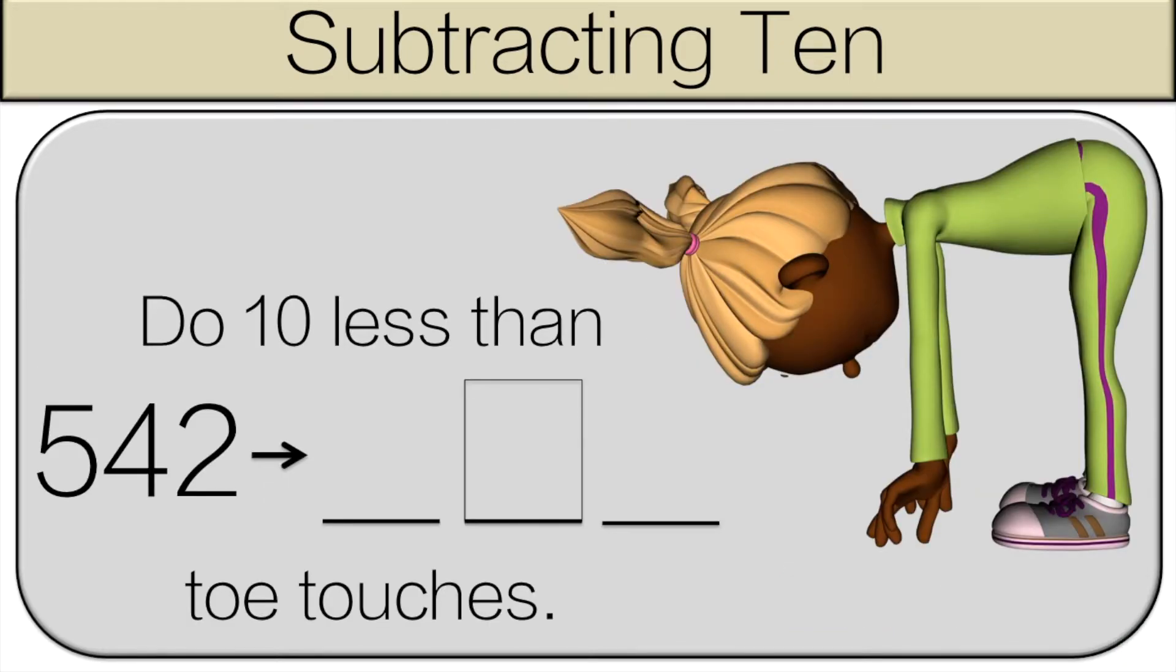What is 10 less than 542? 10 less than 542 is 532. What's in the box? 3. So you're going to do 3 toe touches.